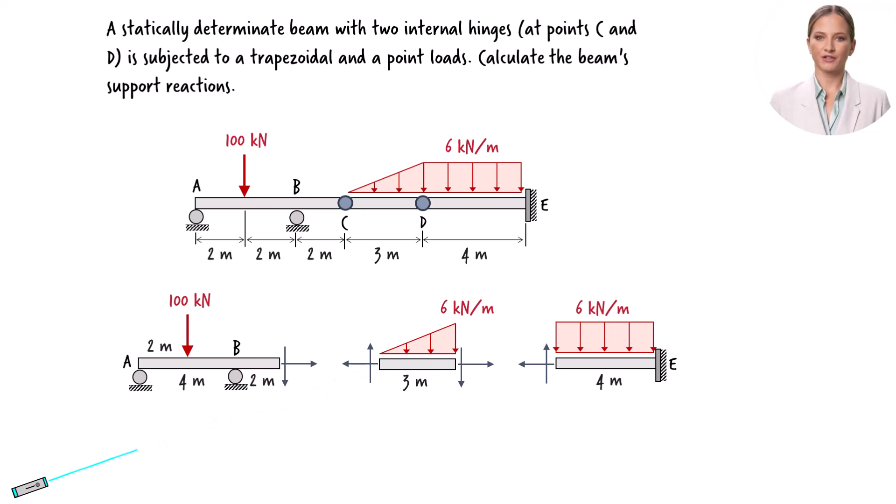At each hinge, the two axial forces must be shown in opposing directions. If one is oriented to the left, the other should be directed to the right. Similarly, if a shear force is directed downward, its counterpart should be drawn pointing upward.